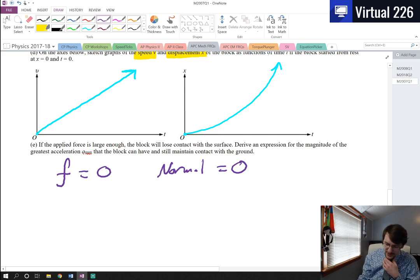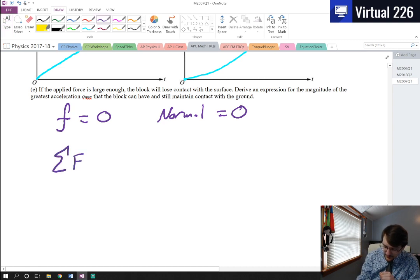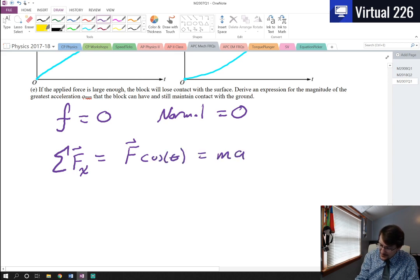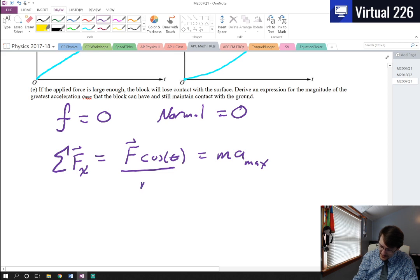So what ends up happening is because our friction is zero, because our normal is zero, you've lifted the block off, the sum of the forces in the x direction then is actually only going to be the force that you're pulling with, F1, or you could call it F max here, times the cosine of theta, and that has to equal M and then A max. Now, if you want to take some steps from here, we can solve for A max just by dividing each side by M. So we know what the maximum acceleration can be.